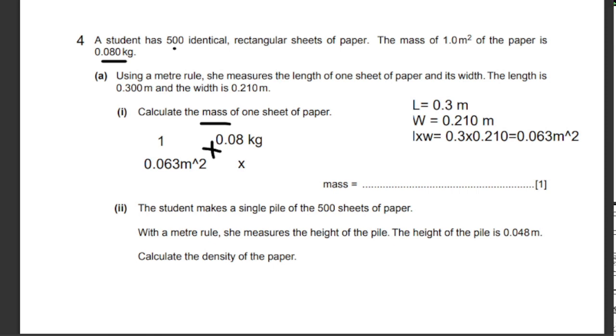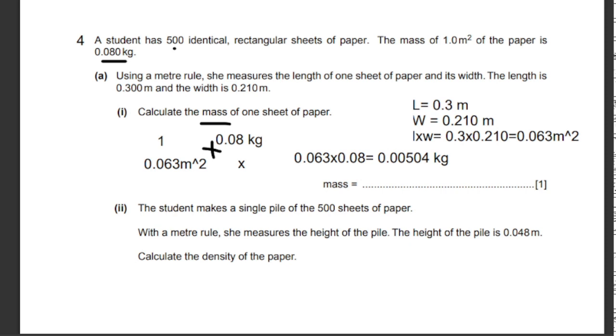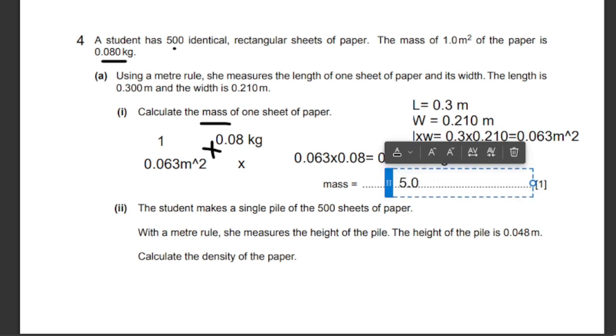Let's multiply both of them: 0.063 times 0.08 to get an answer of 0.00504 kilograms. I can just directly write this value as it already has two significant figures, or I can convert it to grams by multiplying by a thousand to get 5.04 grams as the mass.